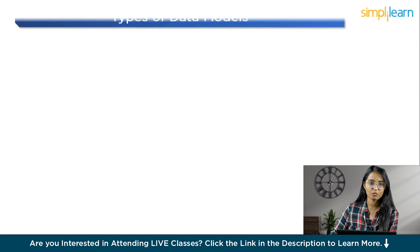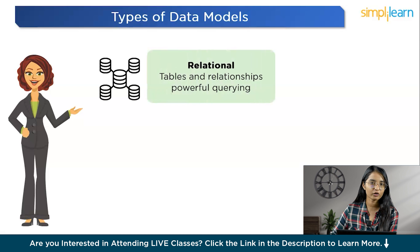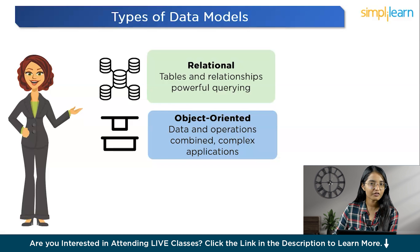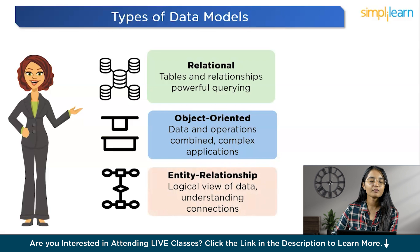Now let's talk about the different types of data models. First, we've got the relational model, which uses tables to store data and establish relationships between them. It's relatively simple to set up and has powerful query capabilities, making it a popular choice. Then we've got the object-oriented model, which combines data and operations into a single model — great for applications with complex relationships and operations, like modeling the robotics of a car factory. We've also got network data models, which are an extension of hierarchy models and allow for multiple parent records for each child, representing more complex relationships. And finally, the entity-relationship model gives you a clear logical view of your data by mapping out entities, attributes, and relationships — like a giant web of connections, making it easy to understand how data flows from one point to another.